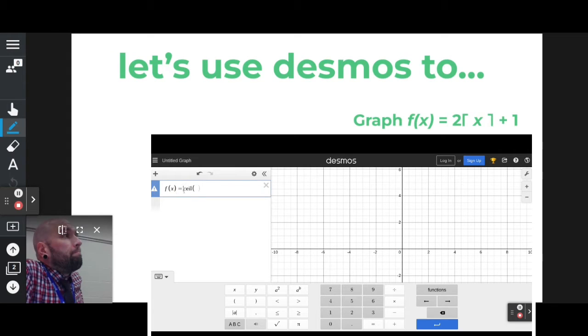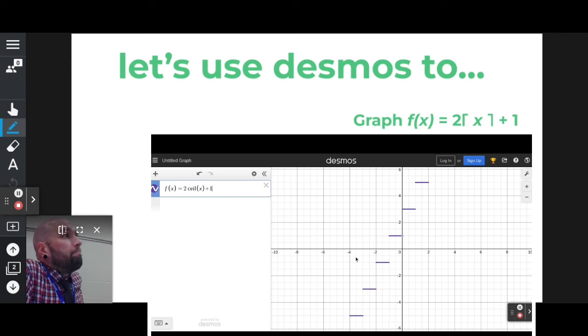Now, what I forgot to do is I forgot to type the two in front of it. Shame on me. But when I type out my ceiling function inside the parentheses, I hit x, I end the parentheses, and I add one. There's my picture. So I don't need the keyboard anymore.